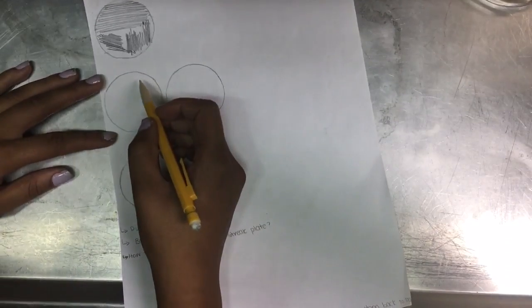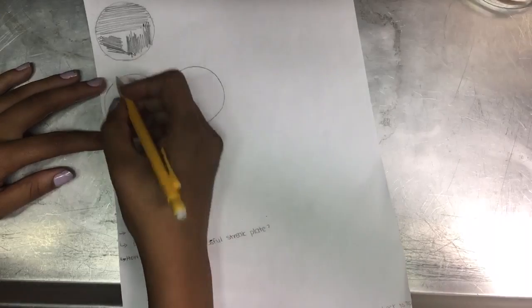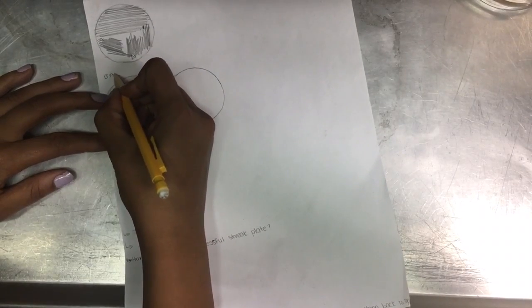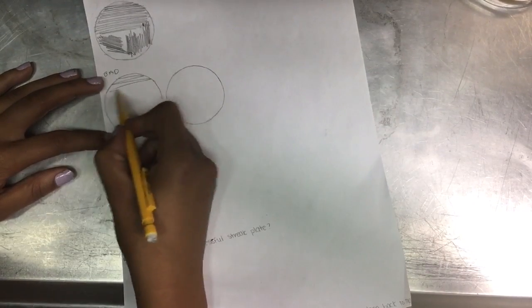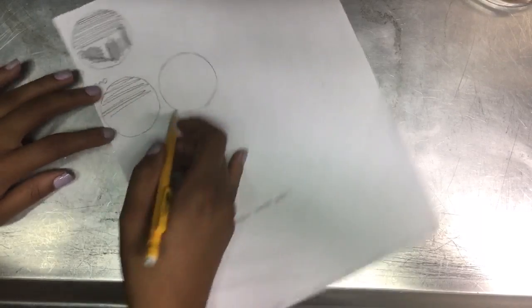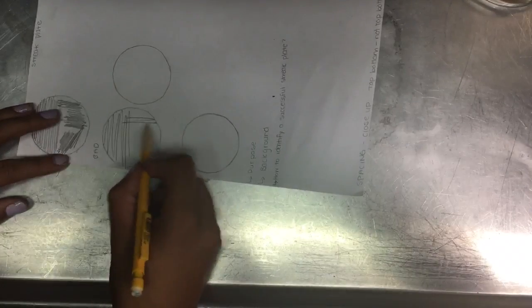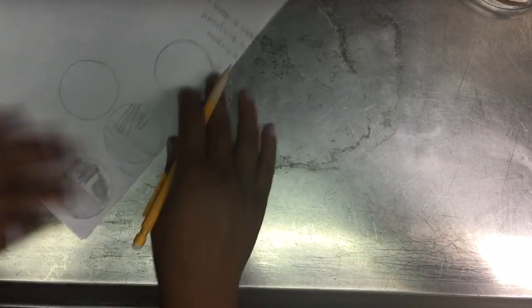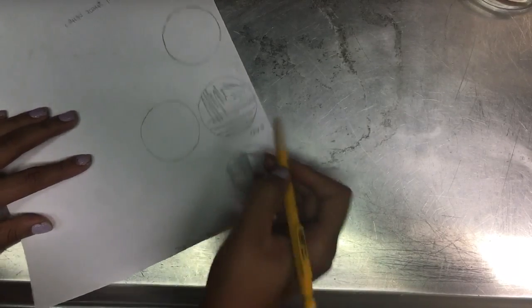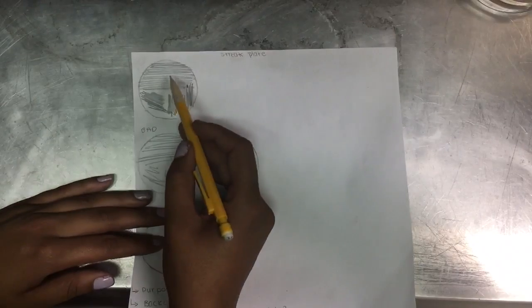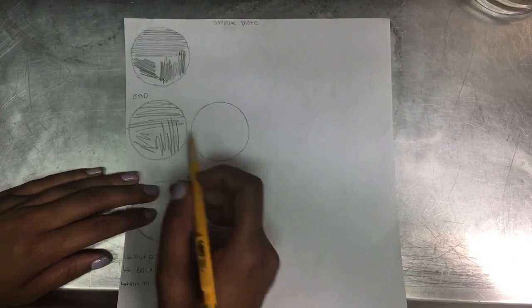So this is a representation of a bad streak plate. We'll go ahead and say bad. And that would be having so much spacing, and then turning it here, going in twice. Again, spacing. So you want to make sure to space it close, like we did here in the first example. So that's bad.